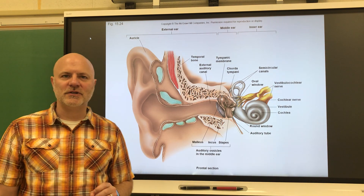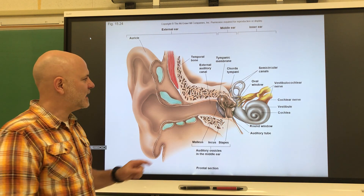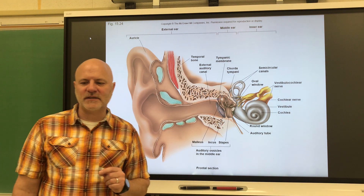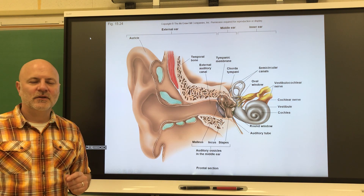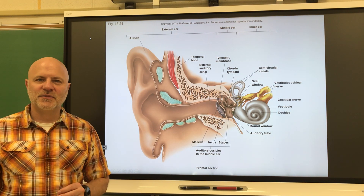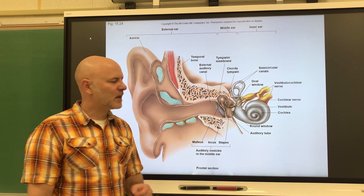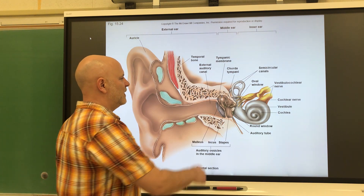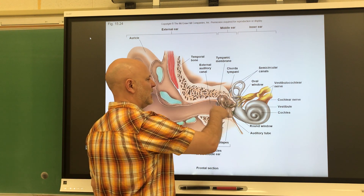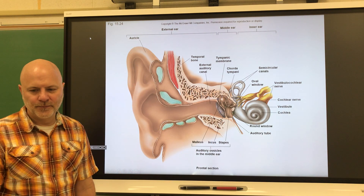The malleus is one of the auditory ossicles — our ear bones. These are the smallest bones in the human body. These three bones could fit comfortably on a dime — that's how small they are.